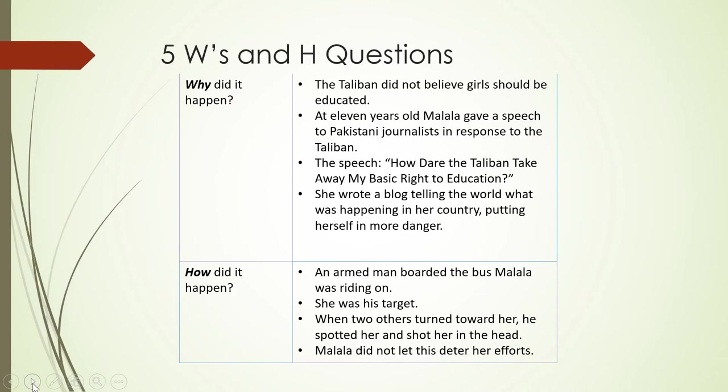Why did it happen? The Taliban did not believe girls should be educated, so that's why all this came about. At 12 years old, Malala gave a speech to Pakistani journalists in response to the Taliban, titled 'How Dare the Taliban Take Away My Basic Right to Education.' If you read on in the article, you will find that she also wrote a blog telling the world what was happening in her country, which put her at even more danger.